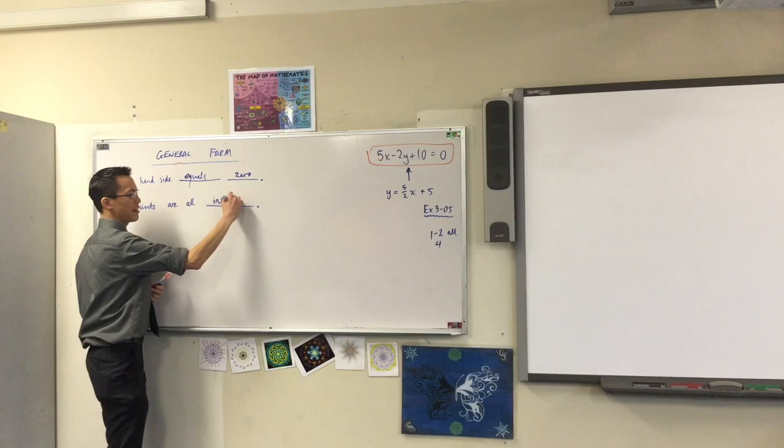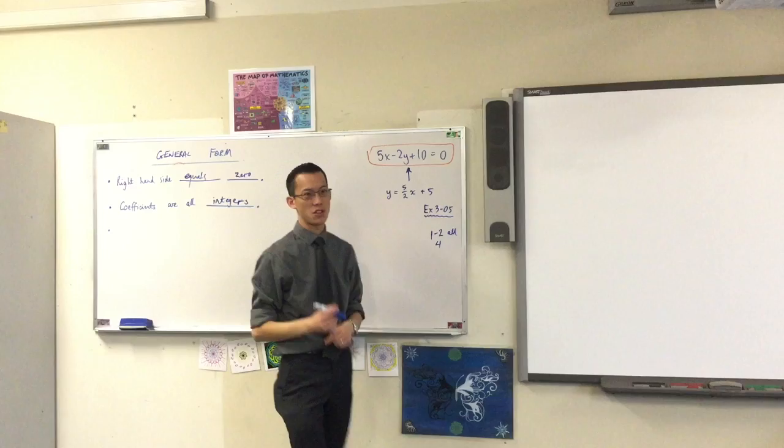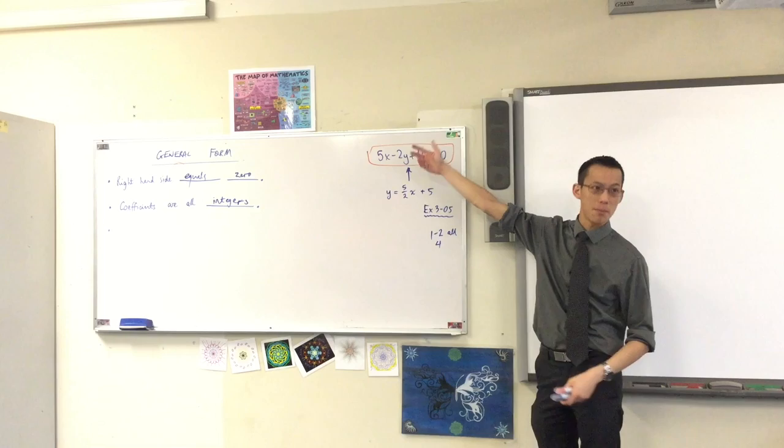If you get given something like this and you rearrange stuff so the right-hand side equals 0, you're not quite in general form yet unless everything is whole numbers. Pluses and minuses are okay.